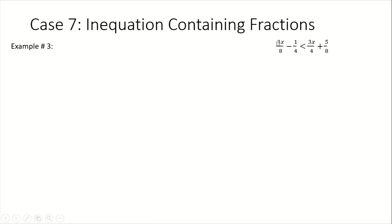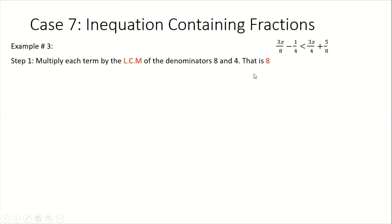Example 3: we are given 3x over 8 minus 1 quarter, less than 3 quarter x plus 5 over 8. The denominators are 8 and 4. The lowest common multiple of 8 and 4 is 8. We take 8 to multiply each individual term: 8 times 3x over 8, minus 8 times 1 quarter, less than 8 times 3 quarter x, plus 8 times 5 over 8.